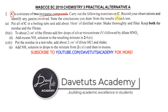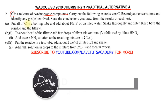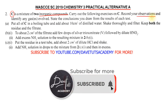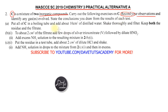We are told the compounds are inorganic and mixed together in a mixture called C. We are to carry out the following exercises on C: record our observations and identify any gases involved — whatever we observe must be recorded, as that is what earns the correct mark. We state the conclusion drawn from the results of each test, not a general conclusion.